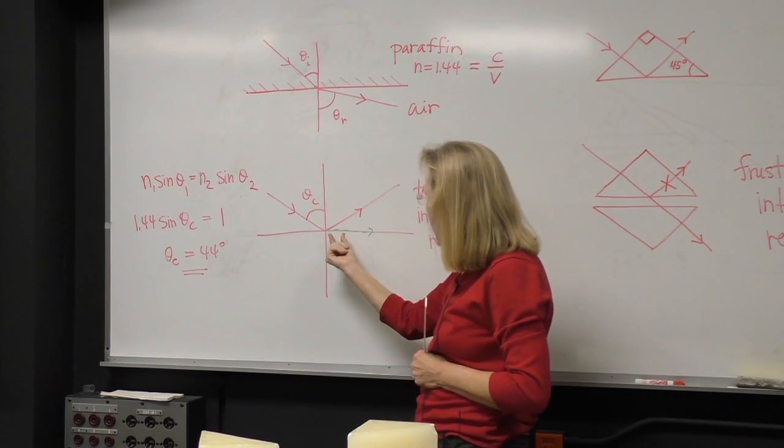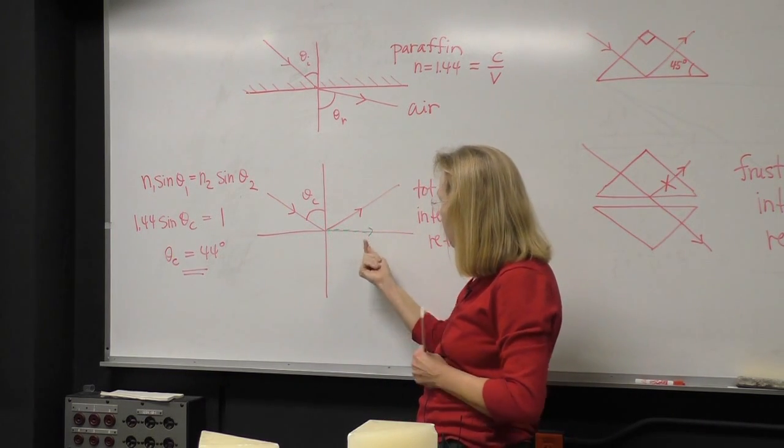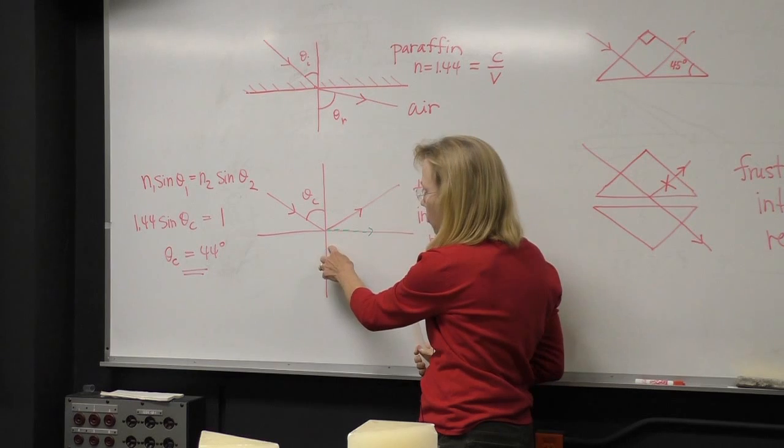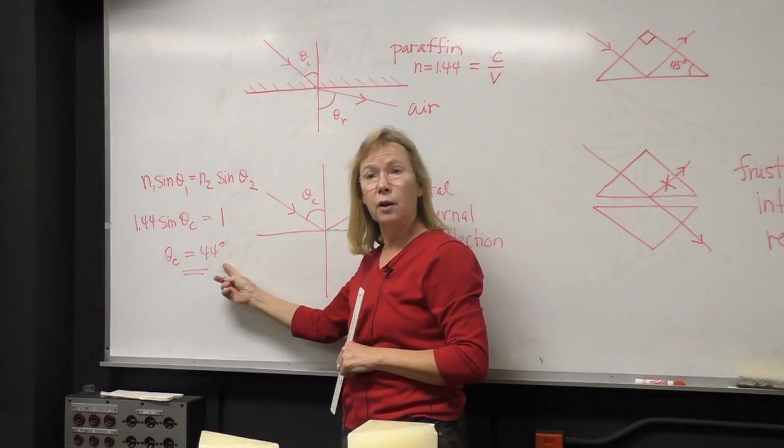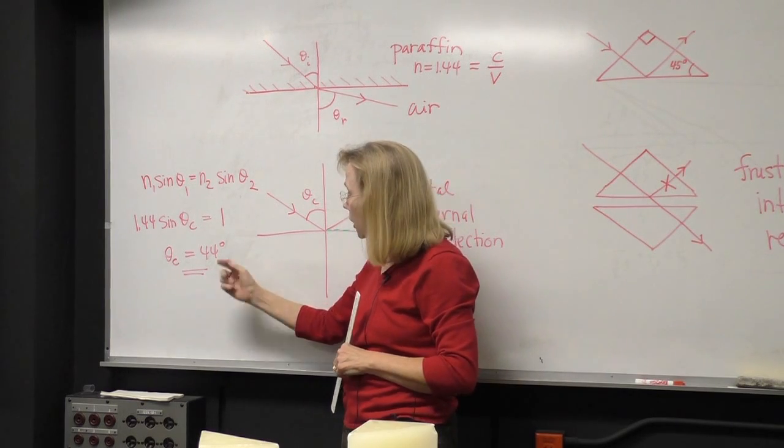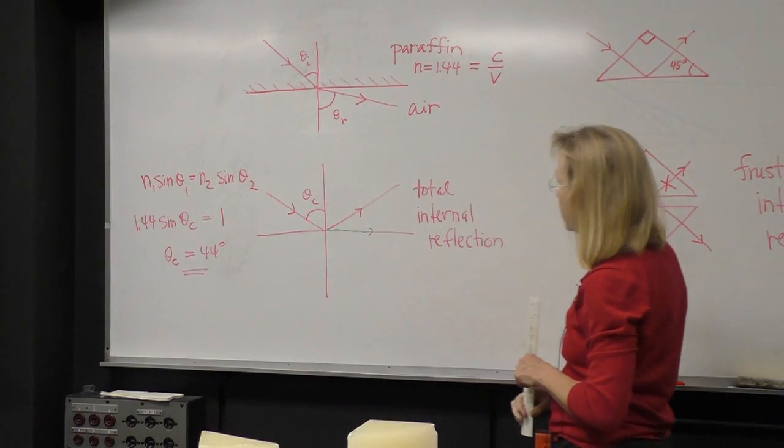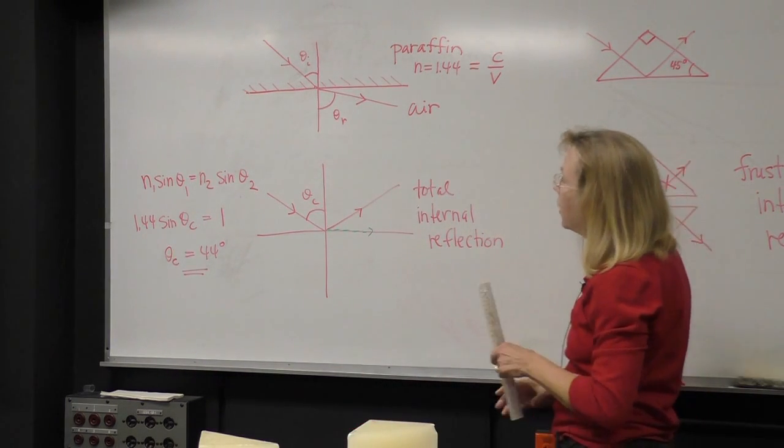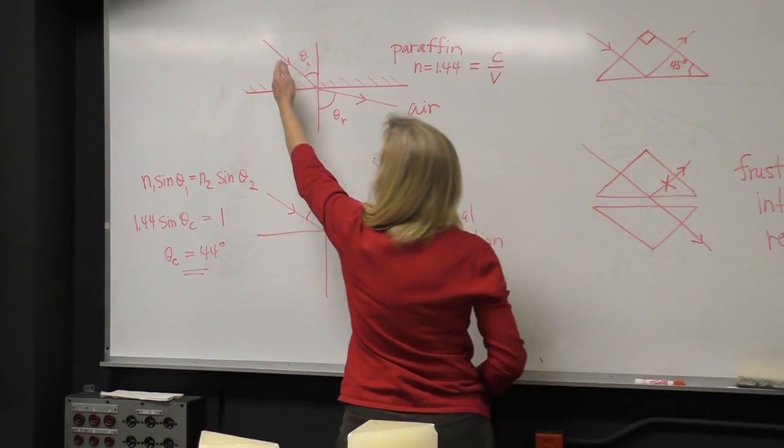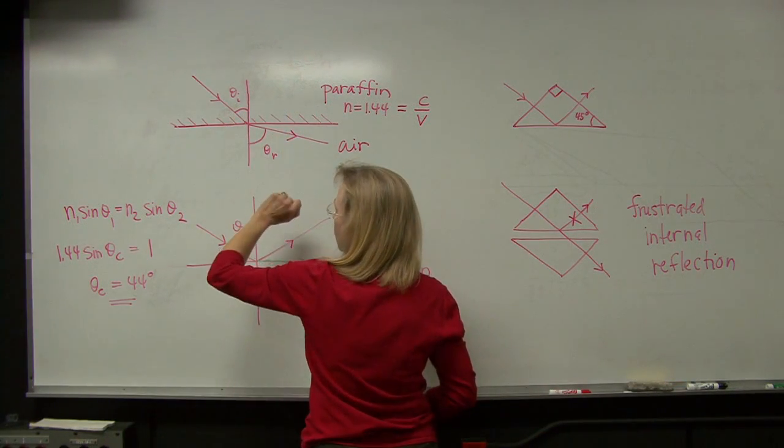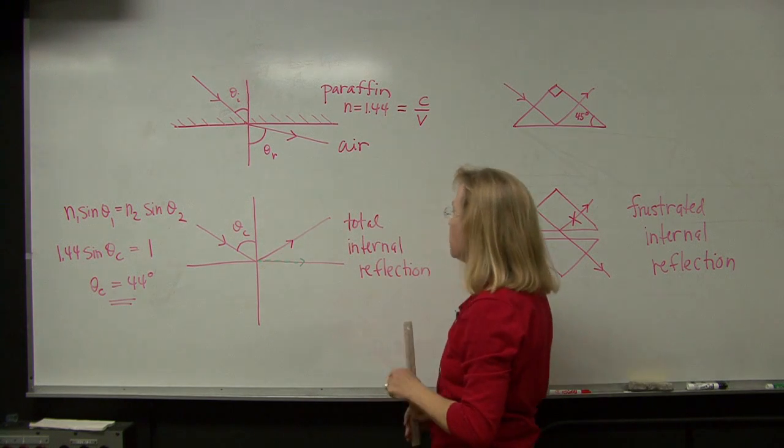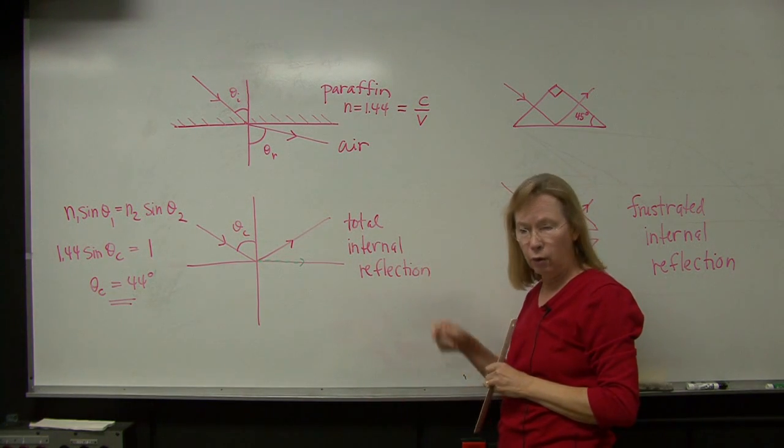...that equals 1 because the index of refraction of air is 1. And if we want that wave to come right along the interface, that's a 90 degree angle. Sine of 90 degrees is 1. I solve that for the critical angle and I find out that the critical angle is 44 degrees. So that means that if the electromagnetic wave comes in at an angle of 44 degrees or greater, it's going to suffer total internal reflection.